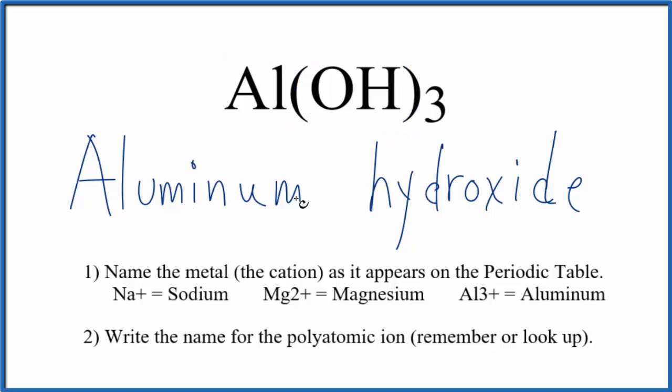If we were given the name aluminum hydroxide and asked to write the formula, you'd have to realize that aluminum has a 3+ ionic charge and the hydroxide has a 1- charge. So we need three of these 1- hydroxide ions to balance out the 3+ on the aluminum ion.